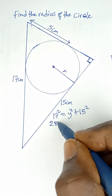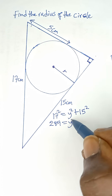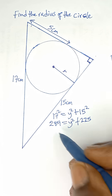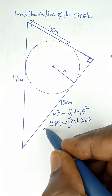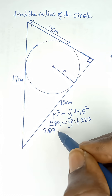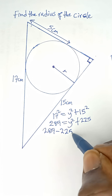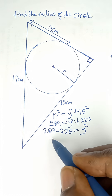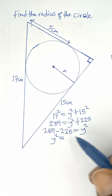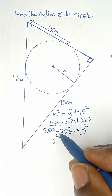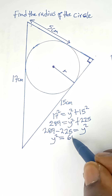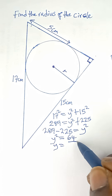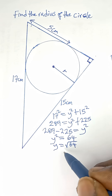17 squared gives us 289, equal to y squared plus 15 squared, which is 225. Taking 225 to the other side: 289 minus 225 equals y squared. So y squared equals 64, and taking the square root of both sides, y equals the square root of 64.